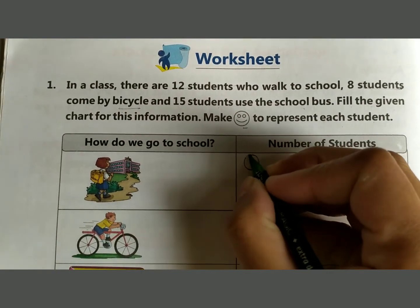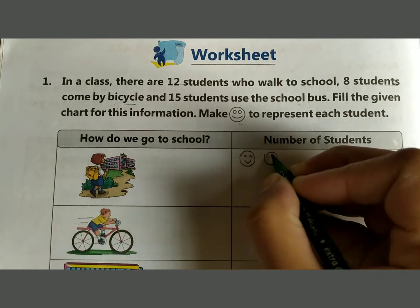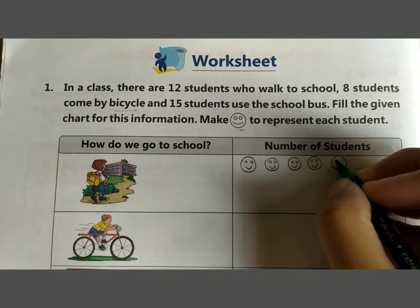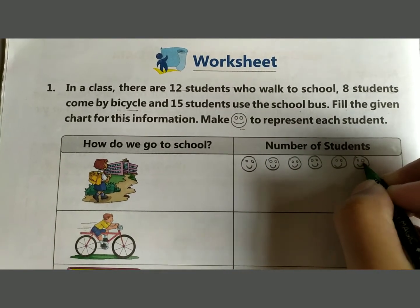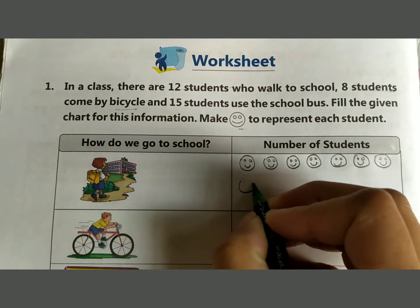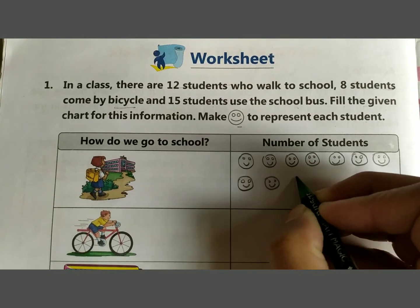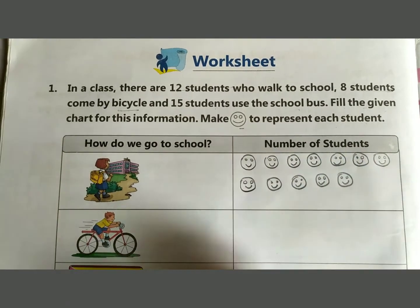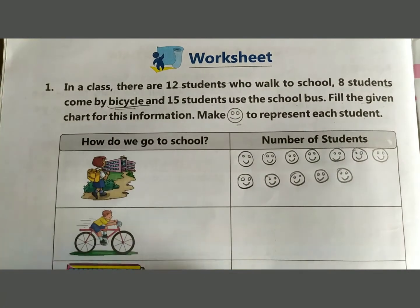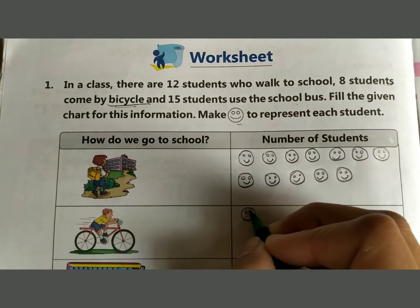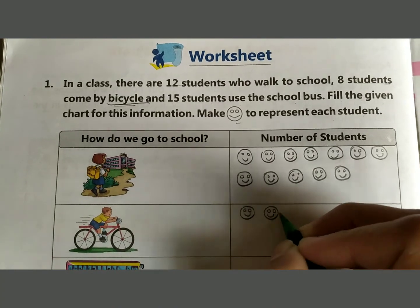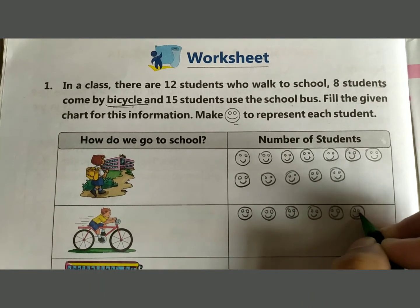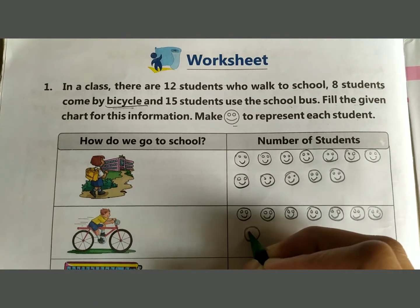For students who walk to school, make 12 smileys: 1 through 12. For students who come by bicycle, draw 8 smileys: 1 through 8.